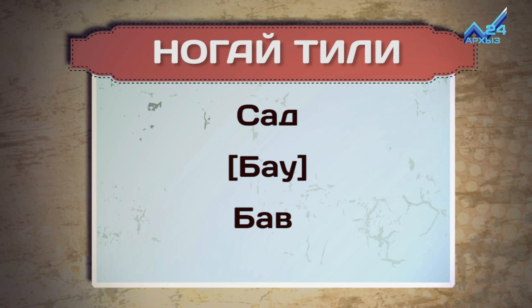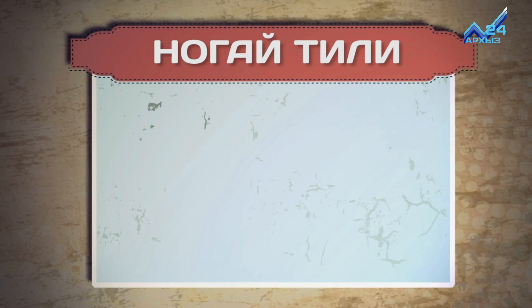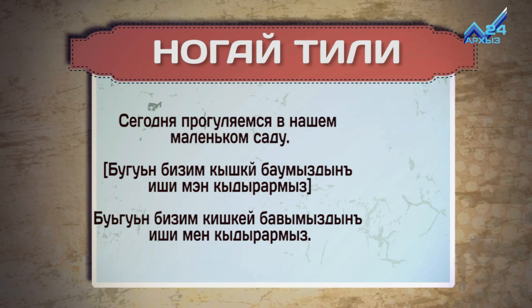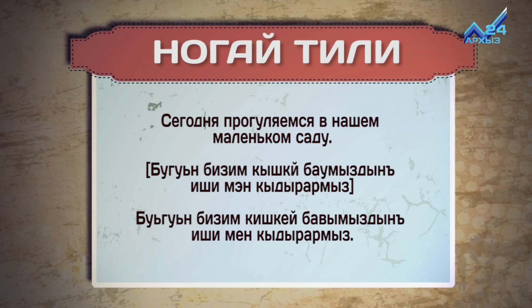Бау (сад / garden). Маленький сад — Кышкей бау. Сегодня прогуляемся в нашем маленьком саду. Бүгін бүзім кышкей бауымыздың шымен күдэрарымыз. (Today we will walk through our little garden.)